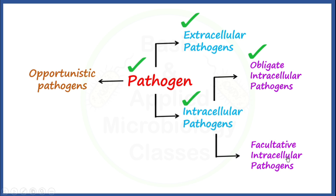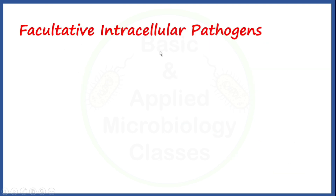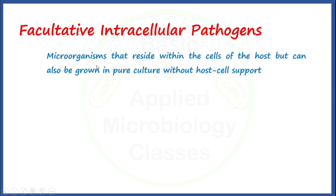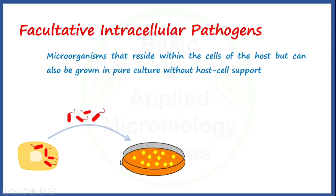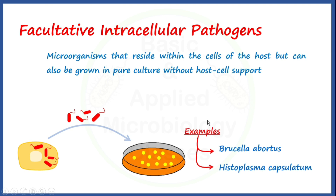Let's talk about facultative intracellular pathogens. As their name indicates, these are also pathogenic microorganisms that reside within the cells of the host, but they can also be grown in pure culture without host cell support — meaning on synthetic or artificial nutritional medium in the laboratory. Brucella abortus is a well-known bacterial pathogen of facultative intracellular type, and Histoplasma capsulatum is an example of a fungal pathogen of facultative intracellular type. Brucella abortus causes brucellosis, a zoonotic disease, while Histoplasma capsulatum causes histoplasmosis.